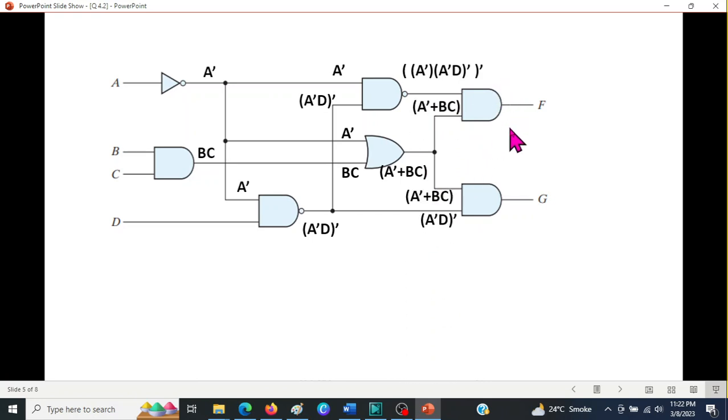Now we can write the equation for F and G. From here you can see F has two inputs and it is an AND gate. So the output will be the AND of the two inputs. And similarly for G, it is AND of these two inputs. But this is not the final answer. We have to actually simplify these, which is more complicated.